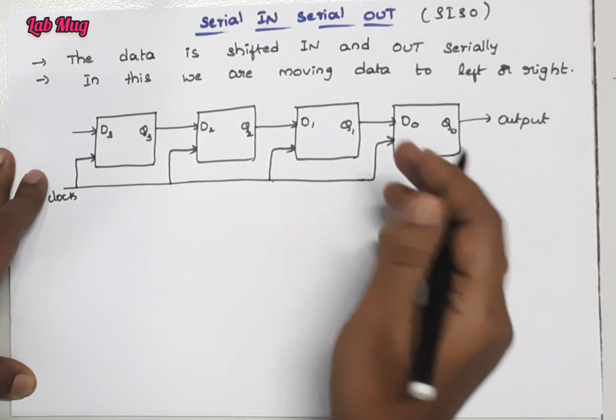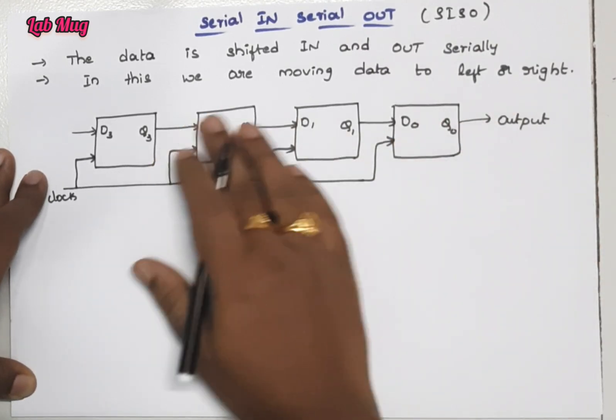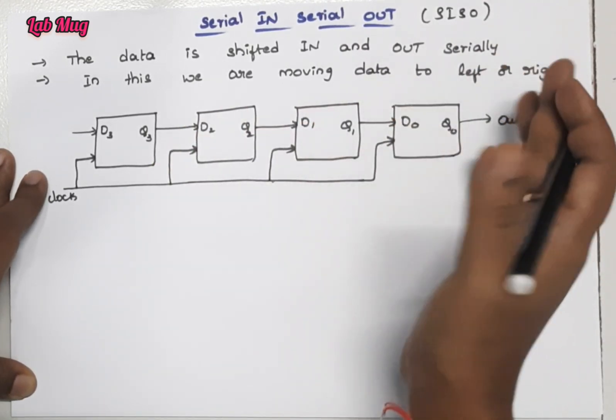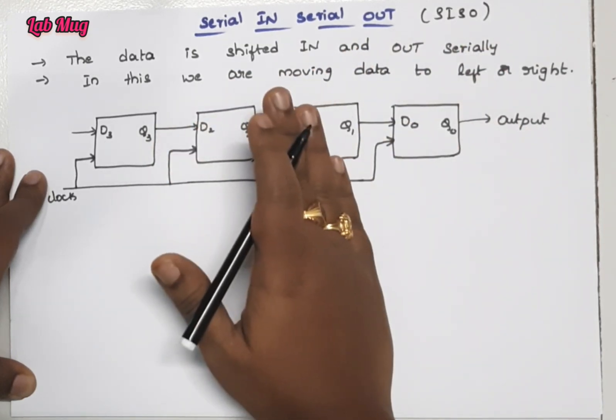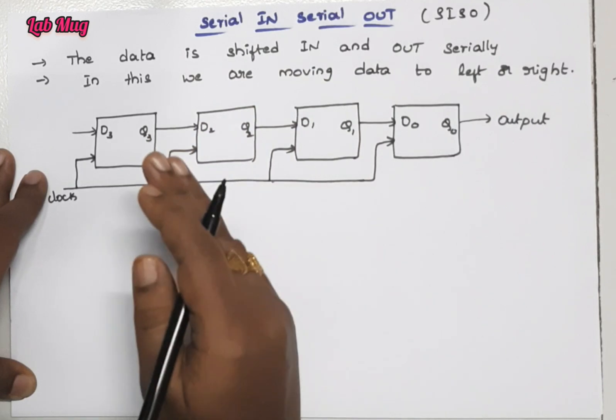These are SISO shift registers - serial in serial out. In this, we are moving data from left to right and right to left also.